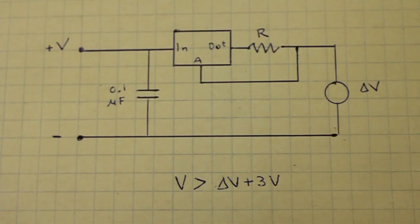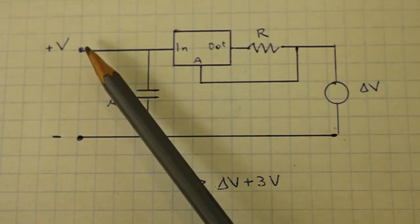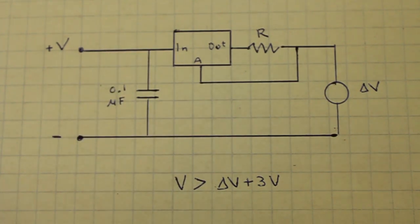So, for example, we have a load that drops 2 volts. We need to apply at least 5 volts at the input in order for the circuit to work properly.